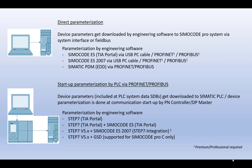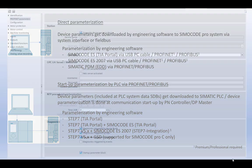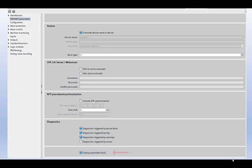That means you have to prevent an override by the Startup Parameterization of your PLC. For this, the Startup Parameter Block option has to be activated.